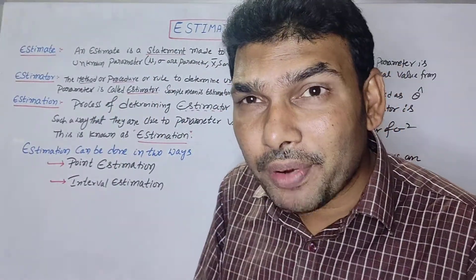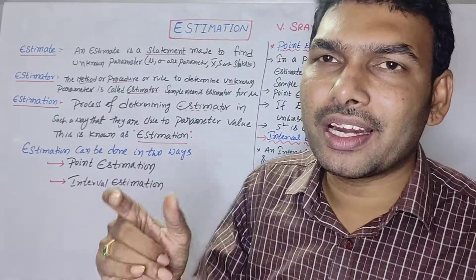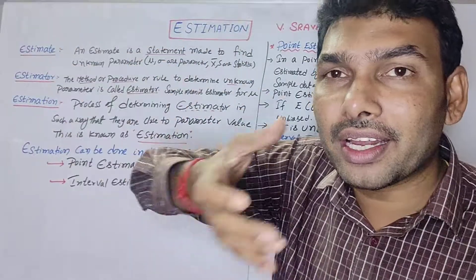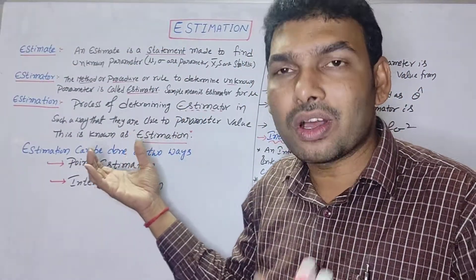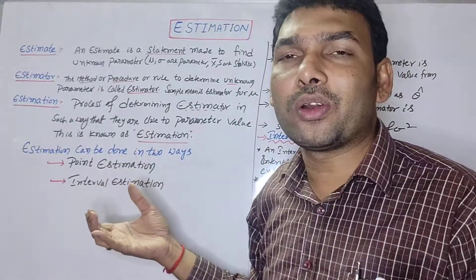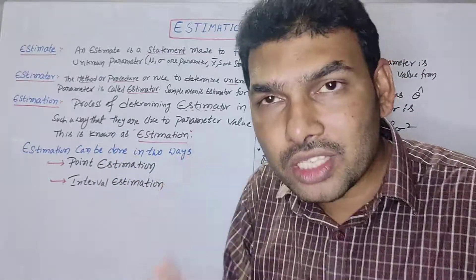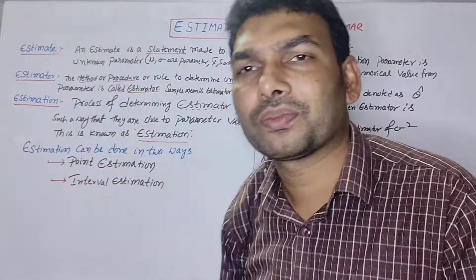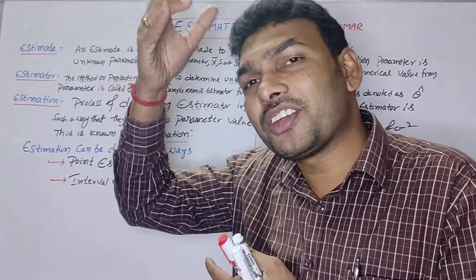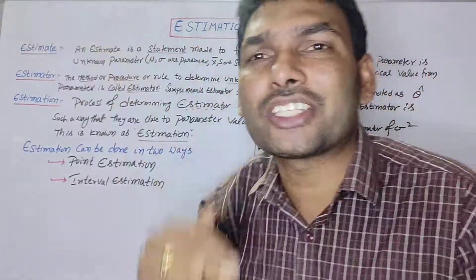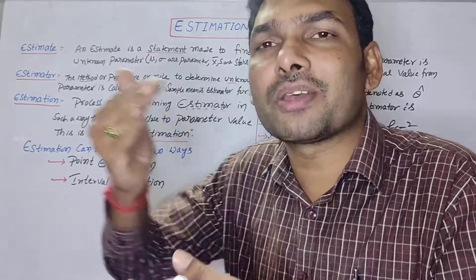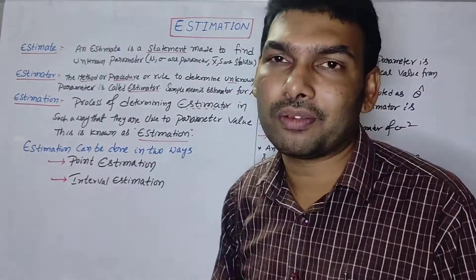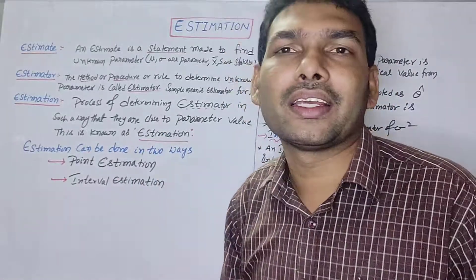Estimation is the process of determining an estimator or estimate — that is, the procedure or method to find an unknown parameter. A good estimator should be closer to the actual value — approximately equal. We can guess correctly, matching approximately equal to the actual value. That is estimation.